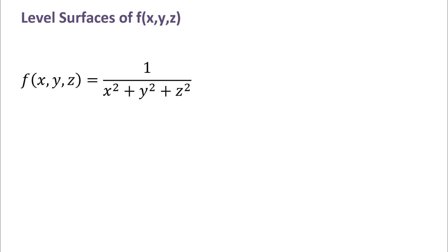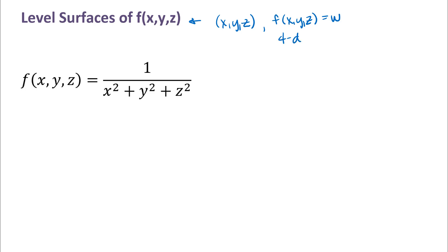For this video we're going to look at level surfaces for a function of three variables. For a function of three variables, you're going to need three axes — x, y, and z — just to graph the inputs, and then you would need a fourth axis, f(x, y, z), or maybe you'd call that the w axis, to graph the output. So that would be a four-dimensional graph.